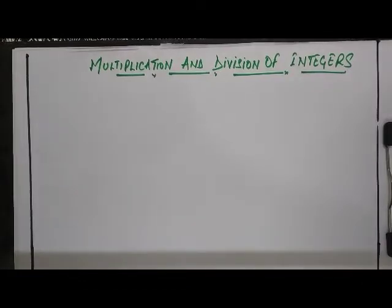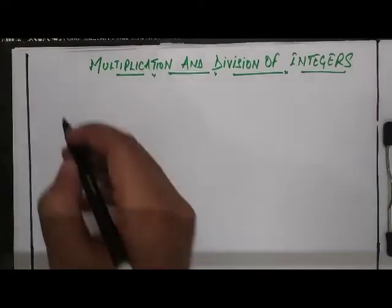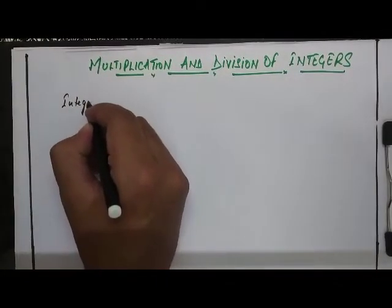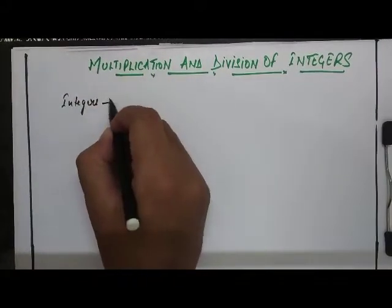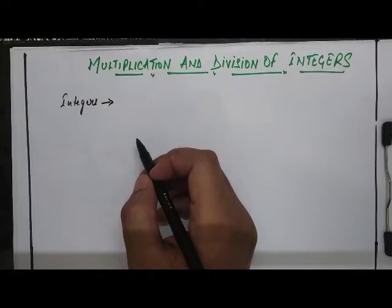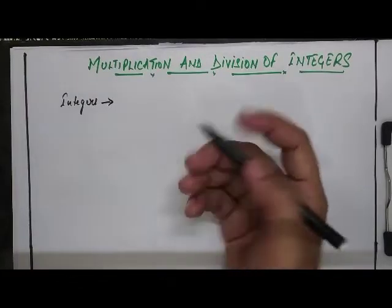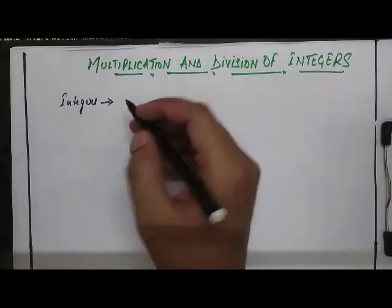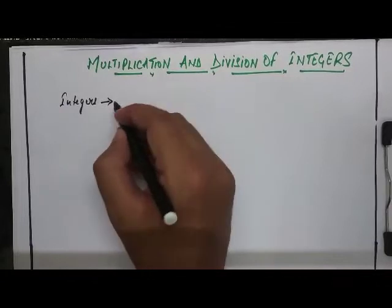So the very first thing to know about is what are integers? Now listen to me very carefully. Integers are set of numbers made up of positive numbers, negative numbers and the number 0 itself. I'll write the definition. It's better for you to write the definition as well.